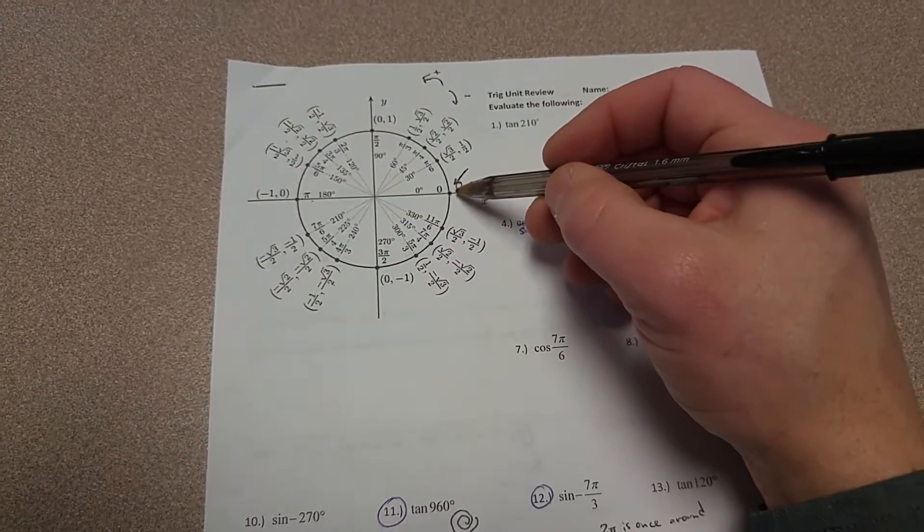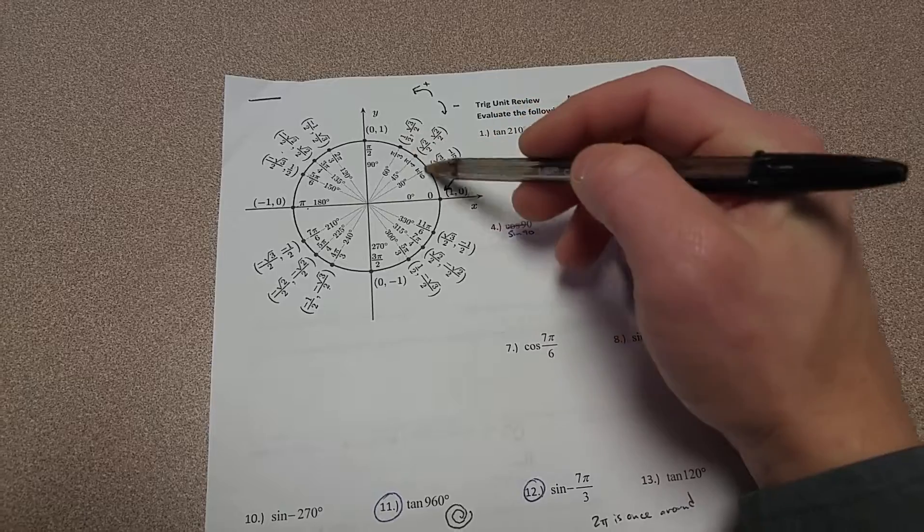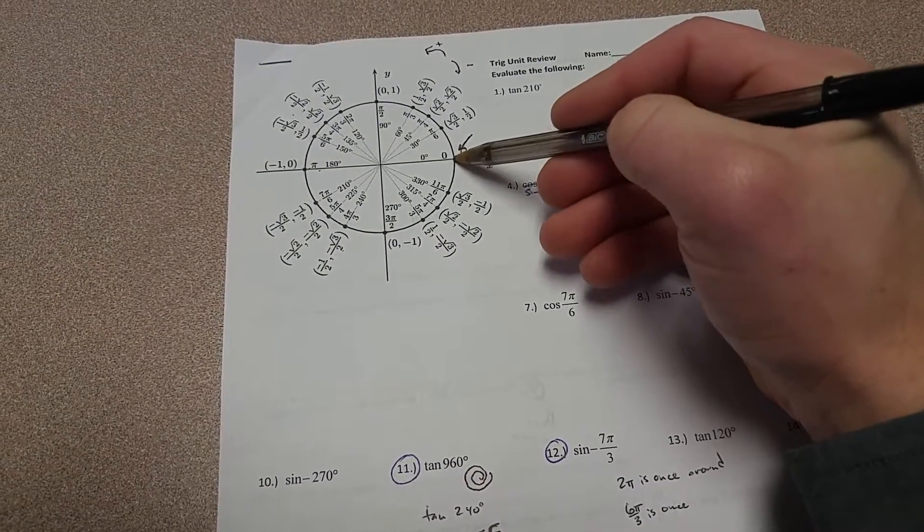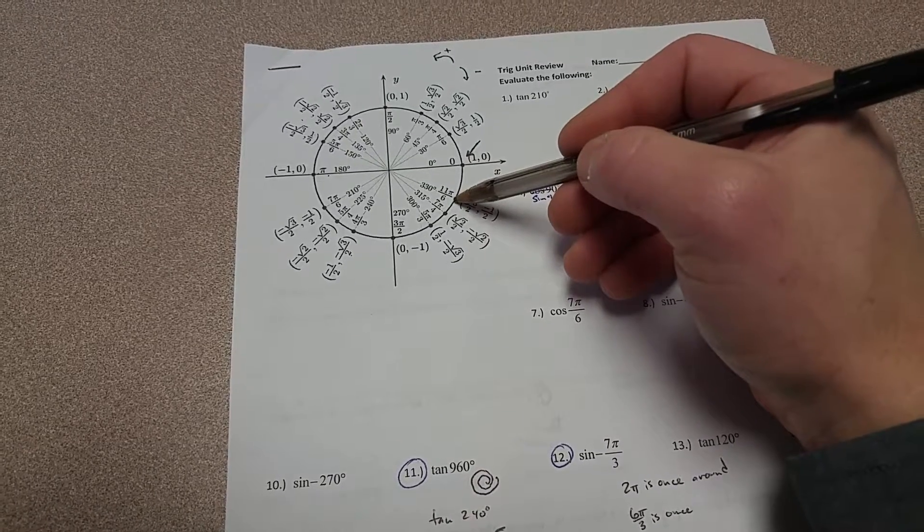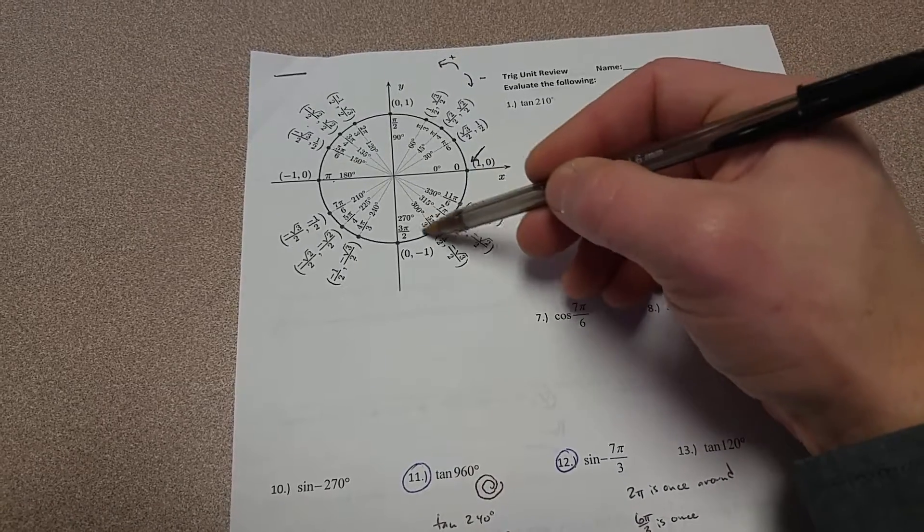So if I start up here, this is going to be 3π over 3, so 6π over 3 is all the way back to here. So 7π over 3 is just one more π over 3. You might have a tendency to go to this first point, but that's π over 6, and the second one is π over 4. The first π over 3 I get to is this one right here.